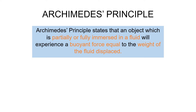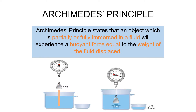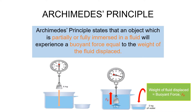We can take a simple example to understand this principle. Let's take a look at this diagram. A 5 kg solid object is suspended by a spring balance and the balance shows a reading of 5 kg. What will happen if we immerse the object in the water? After we immerse the object in the water, you will see that the reading will be a lower number compared to the previous one. That is because of the buoyant force acting on the object. You will also notice that some water was displaced.